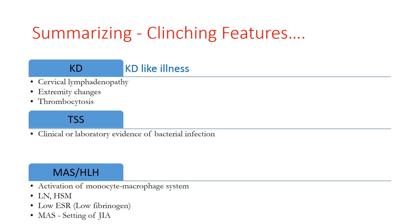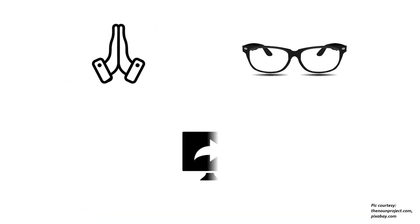To summarize the clinching features: Kawasaki disease is characterized by cervical lymphadenopathy, extremity changes, and thrombocytosis — sub-acute changes and thrombocytosis typically appear later in the course. Toxic shock syndrome will have definite clinical or laboratory evidence of bacterial infection. MAS and HLH can be differentiated by activation of the monocyte-macrophage system, presence of lymphadenopathy and hepatosplenomegaly, low ESR (a very important and repeatedly stressed differentiating feature), low fibrinogen, and MAS being typically seen in the setting of systemic-onset JIA. Thank you for watching and do share the knowledge.